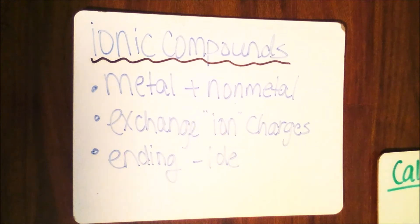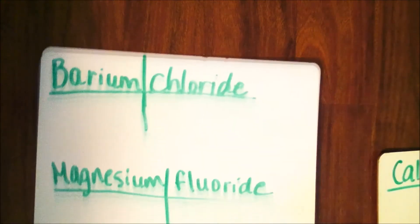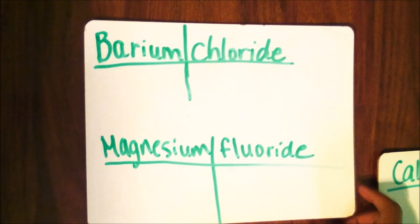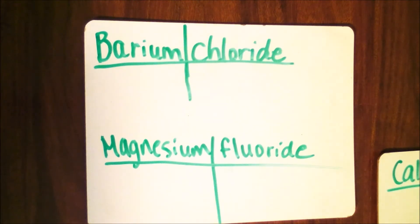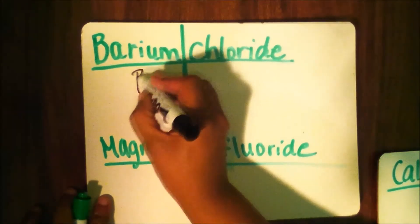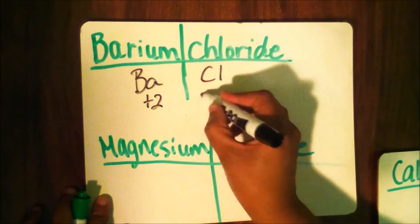Let's take a look at an example that deals with ionic compounds. The first example is barium chloride. You must look at your periodic table to find the charge for barium and the charge for chlorine. Barium has a positive 2 charge, and chlorine has a negative 1 charge.